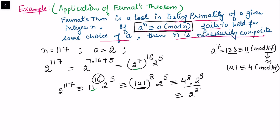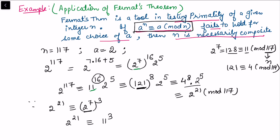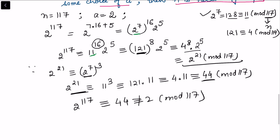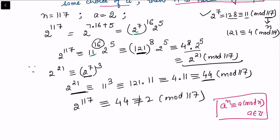Now 2^21 = (2^7)^3 ≡ 11^3 (mod 117). We compute 11^3 = 11^2 × 11 = 121 × 11 ≡ 4 × 11 = 44 (mod 117). Therefore 2^117 ≡ 44 (mod 117). Since 44 ≠ 2, the congruence a^n ≡ a (mod n) fails. This means n = 117 is not prime — it must be composite.